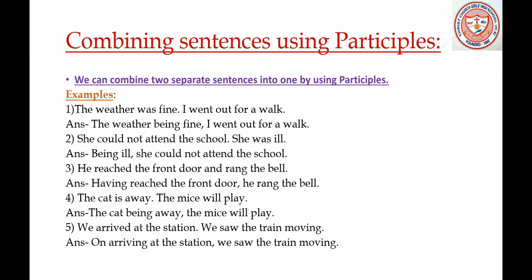Next we have combining sentences using participles. We can also combine individual sentences into one using participles. Example: 'The weather was fine. I went out for a walk.' These two sentences can be joined as: 'The weather being fine, I went out for a walk.' Here 'was' gets changed into 'being.'